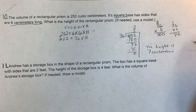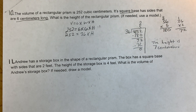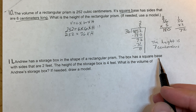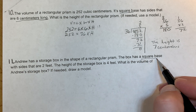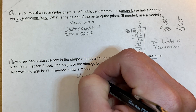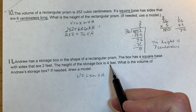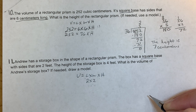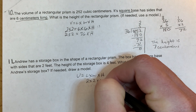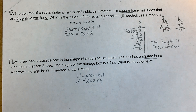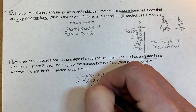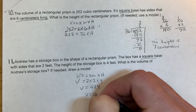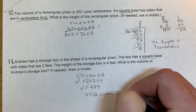The height is seven centimeters. Okay, number 11 — this one is a storage box. Again, we're looking at volume. The box has a square base with sides of two feet. We start with the formula length times width times height, and the height is four. Inserting two for both length and width because it's a square base, and height is four feet: two times two is four, four times four is 16, so the volume is 16 cubic feet.